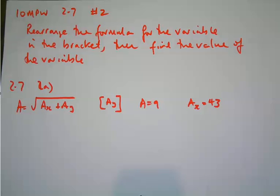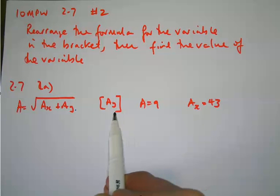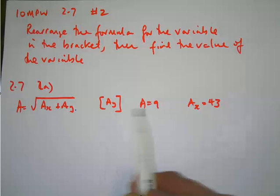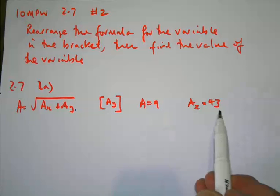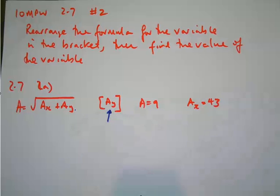In 2a's case, I've got a equals the square root of ax plus ay, where x and y are subscripts. So I've actually got three different values of a: a with some value of x, a with some value of y, and a, but they're three separate variables. I have to rearrange the formula for ay. I know what a is and I know what ax is, so I've got three different variables. I need to rearrange it for ay, so I need to make that the subject of the formula.